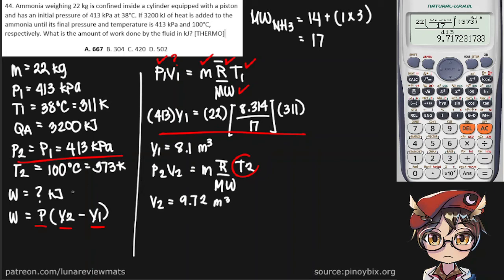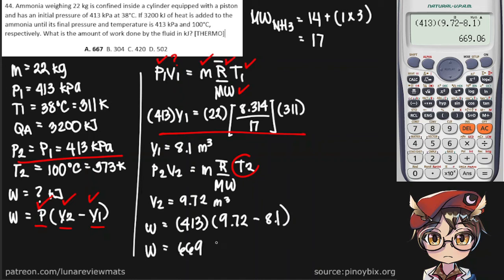OK, so now we have everything we need to find the work done by the fluid. That is, once again, 413 for the pressure, then 8.72 minus 8.1. Let's see if that's correct. OK, so we get a work done of 669 kilojoules.